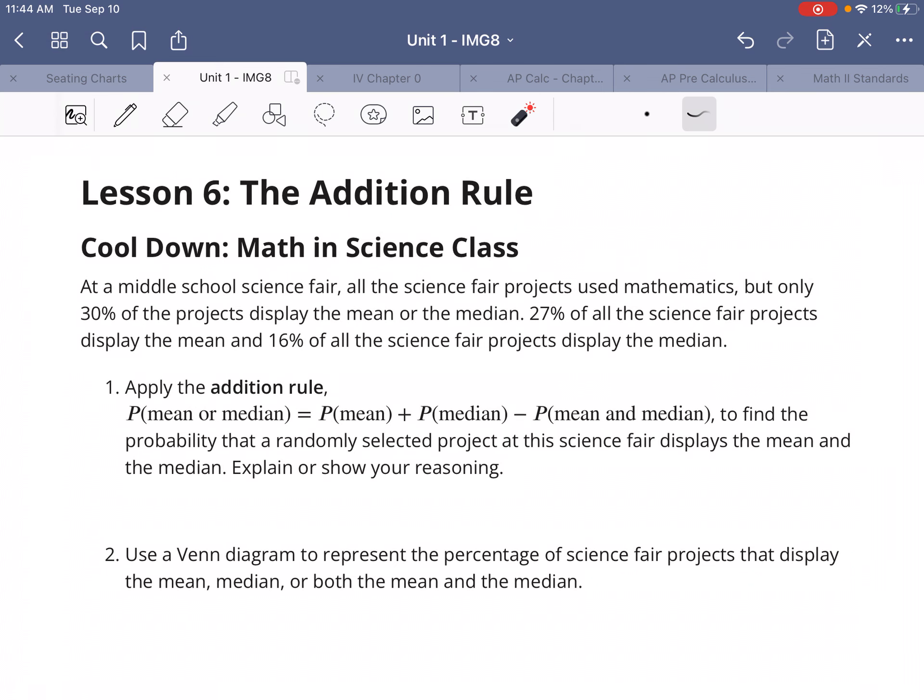So let's take a look at the cool down. At a middle school science fair, all the science fair projects used mathematics, but only 30% of the projects display the mean or the median. 27% of all the science fair projects display the mean, and 16% of all the science fair projects display the median.